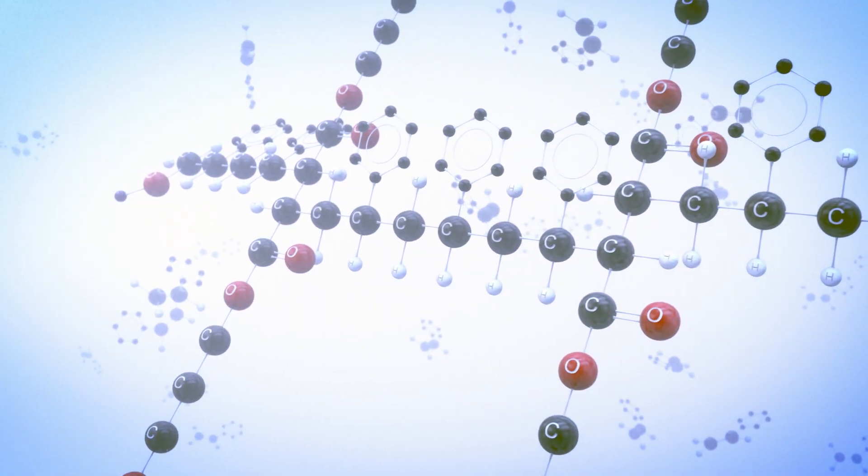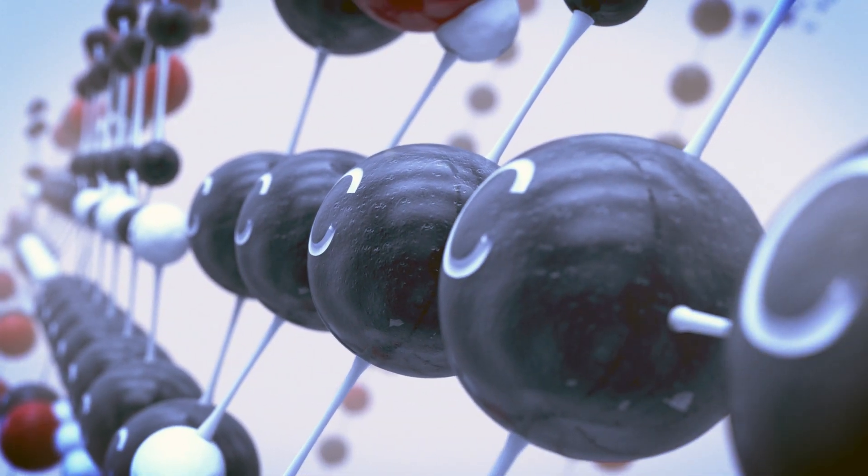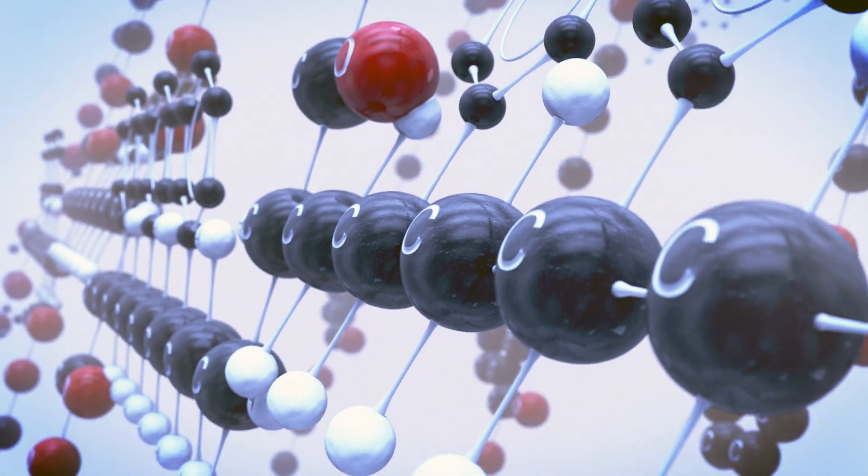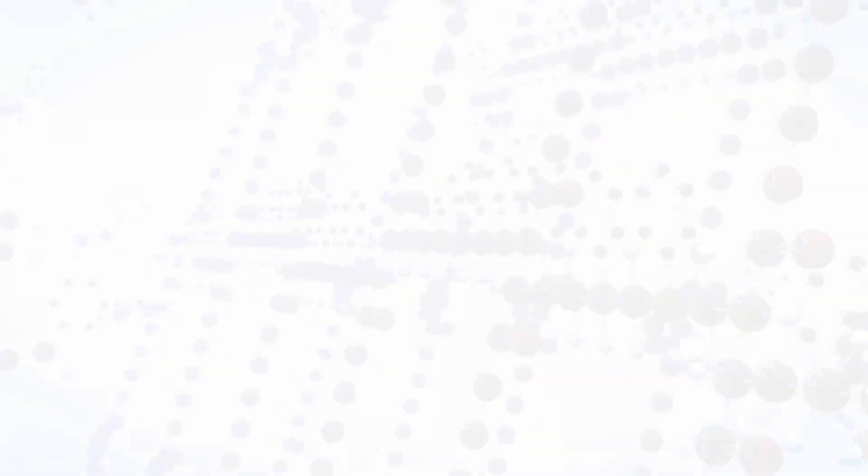So basically the curing process consists of building small styrene bridges between polyester molecules and this takes place throughout the whole matrix and in all directions. Let's look again when we zoom out.